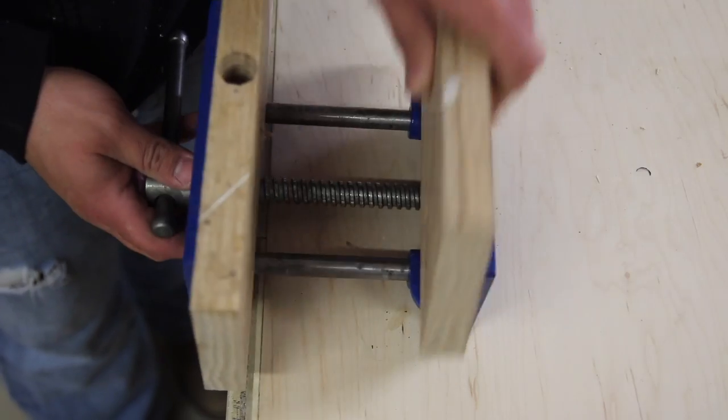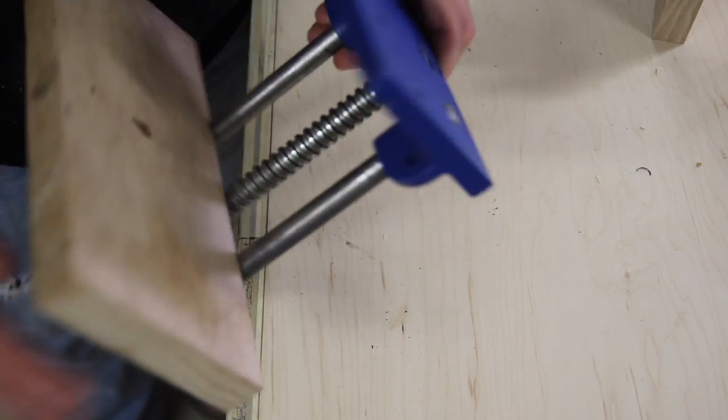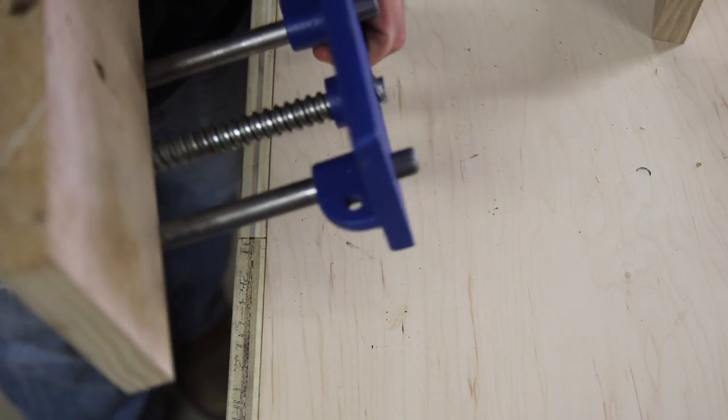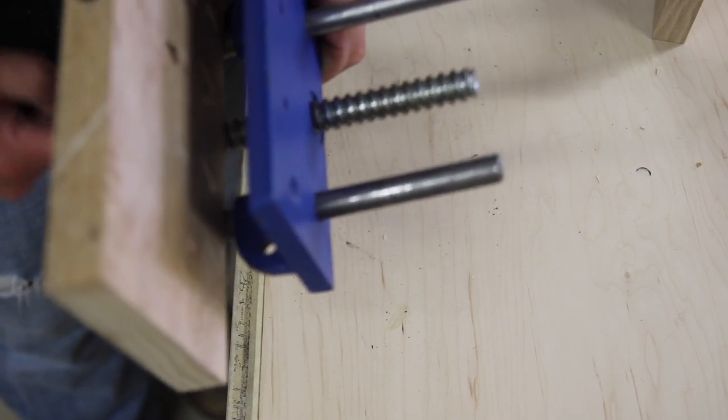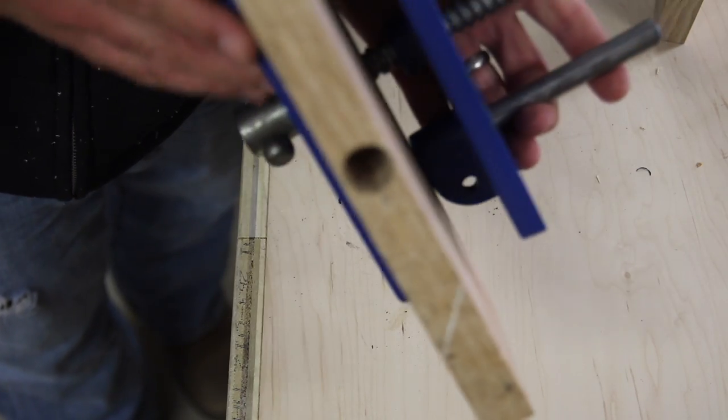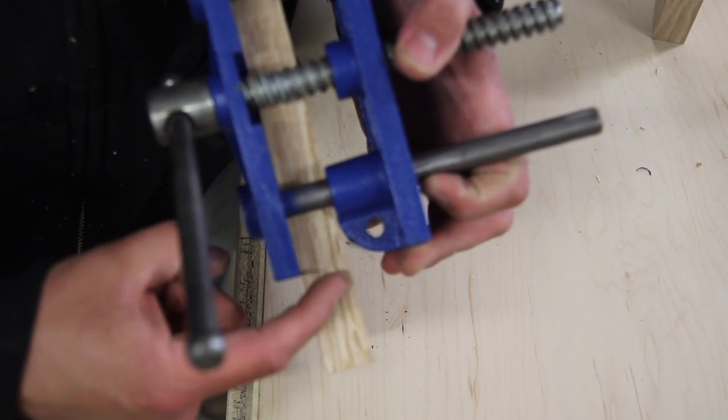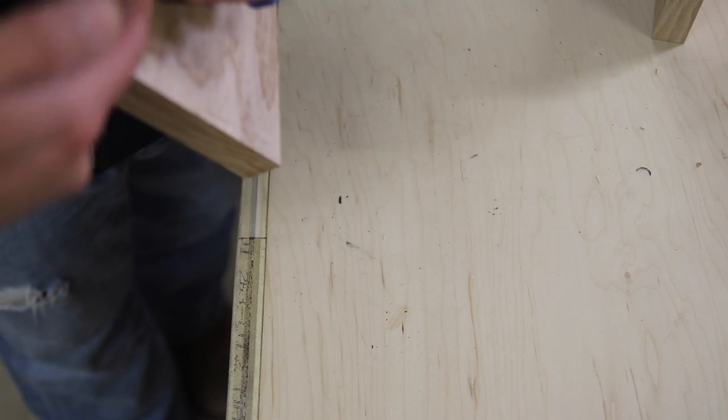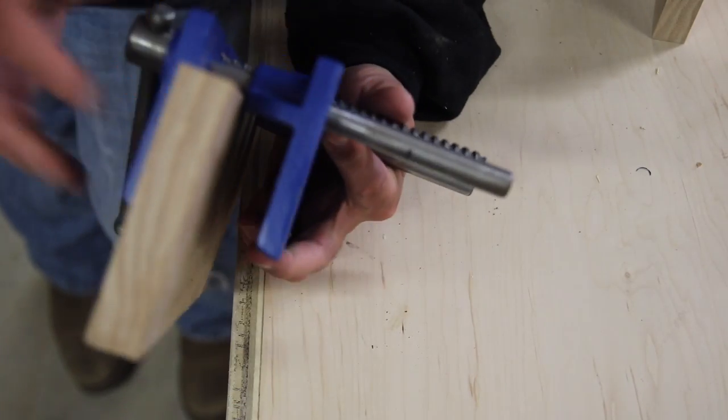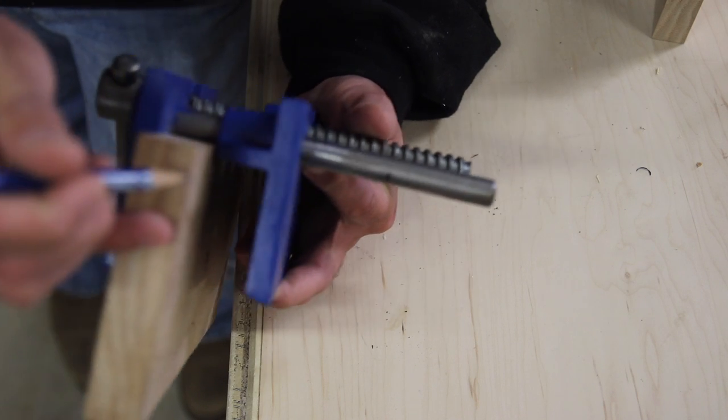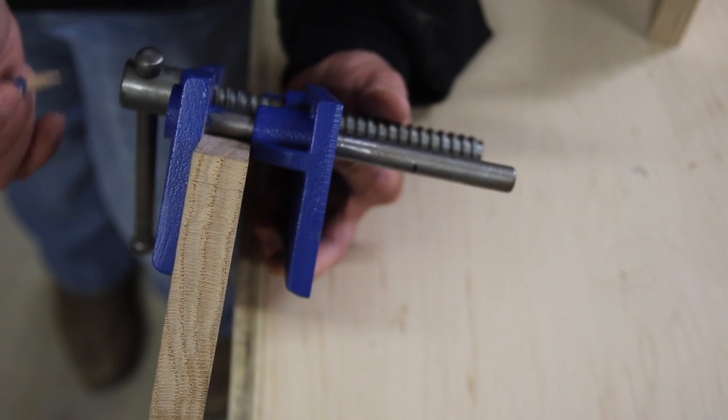But one thing I want to show you is when you mount this, if you reference off of these rods right here, let me show you what's gonna happen when you go all the way in. Those wings down there are gonna hit that. See where it's meeting right here? Those wings are hitting that jaw. We're gonna have to take and just cut a piece of that out on the table saw and just rip off about that much.